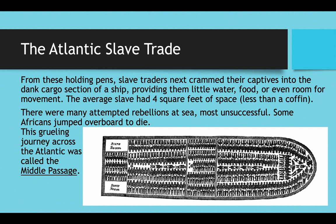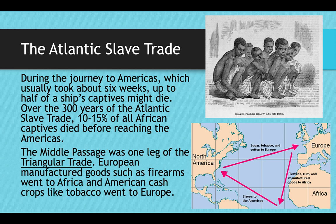Over the course of the 300 years that the Middle Passage took place, with so many slave ships coming in, about 10 to 15% of all slaves died even before they got to the New World. This was all part of what was called the triangular trade: European manufactured goods like firearms were shipped to Africa; from Africa, slaves came to the Americas; and from the Americas, tobacco or sugar traveled to Europe — and then it kept going in this triangle that was very profitable for those running it, but ruined tens of millions of lives along the way.